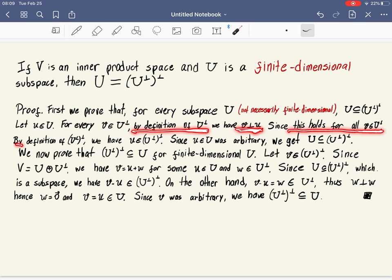But this holds for all vectors v in U⊥, u has to be in U⊥⊥. u is in U⊥⊥. Why? Because we have just proved that u is orthogonal to every vector v in U⊥.